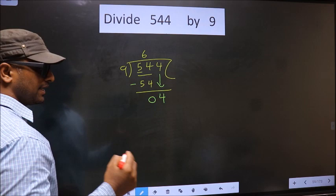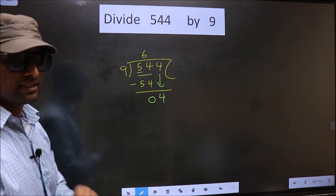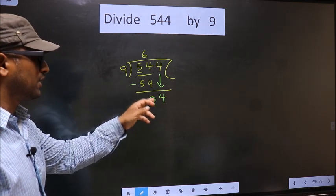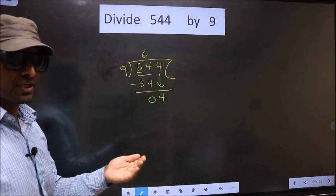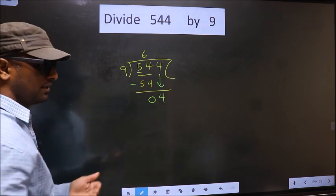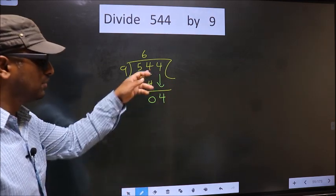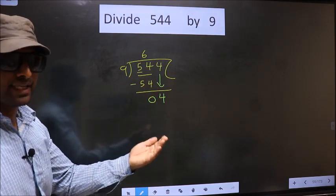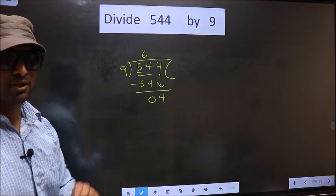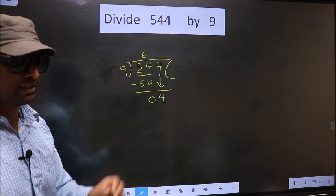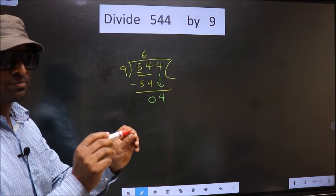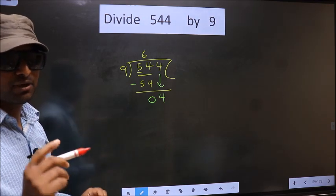This is where the mistake happens. Here we have 4, and here 9. 4 is smaller than 9. So what many do is they put a dot and take 0 here, which is wrong. Just now you brought the number down, and in the same step you want to put a dot and take 0 — which is wrong. I repeat: bringing the number down and putting a dot and taking 0, both at the same step, you are not supposed to do.